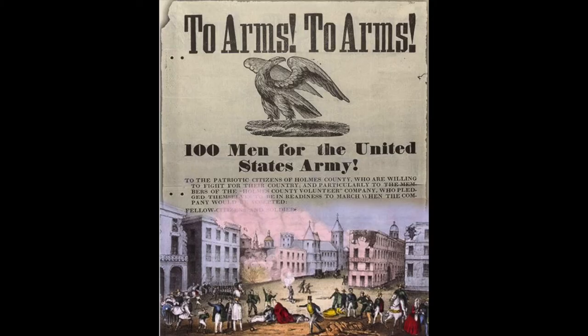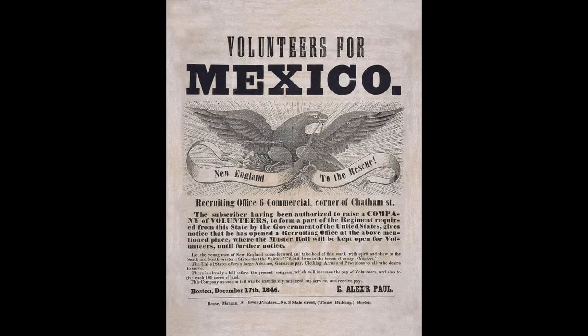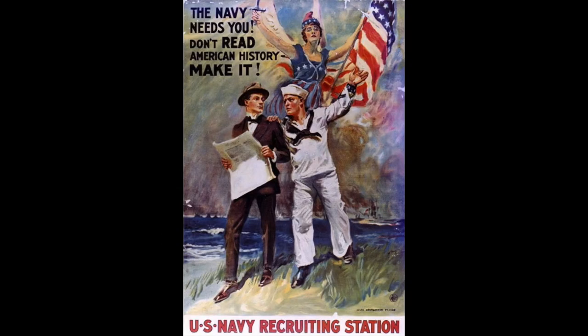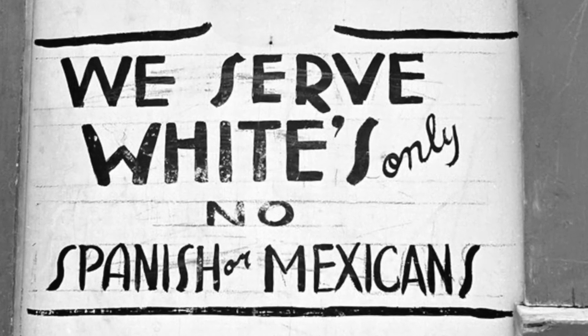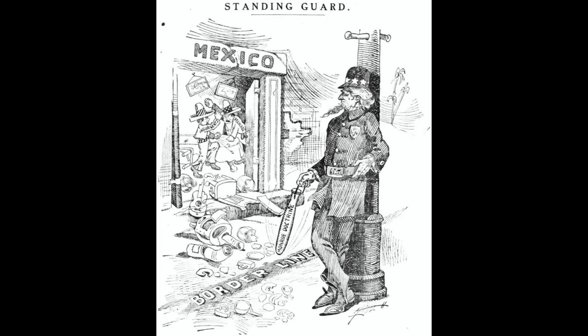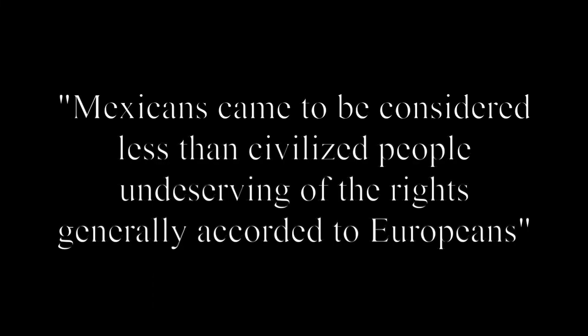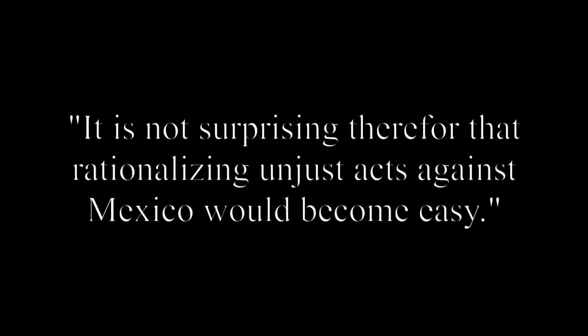Politically, the early years of war are incredibly popular. They distract a democracy from its internal disputes and unite its citizens against a common enemy. To this day, many people see being against war as being against American troops. The second reason was racism. American perceptions of Mexicans worked alongside Polk's lies to create an environment that supported an illegal and unjust war. Historian John Eisenhower writes that, given the atmosphere of anti-Mexican racism, Mexicans came to be considered less than civilized people, undeserving of the rights generally accorded to Europeans. It is not surprising, therefore, that rationalizing unjust acts against Mexico would become easy.